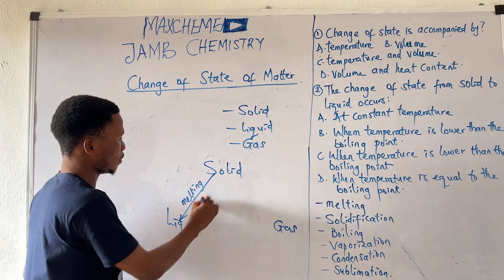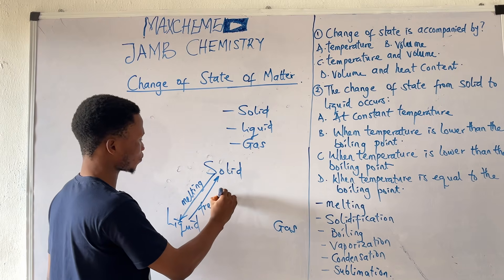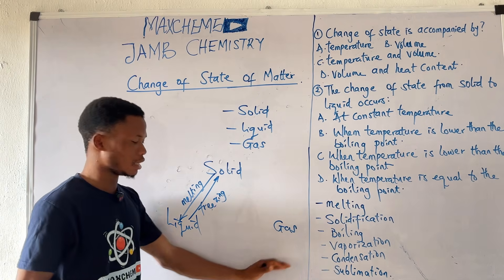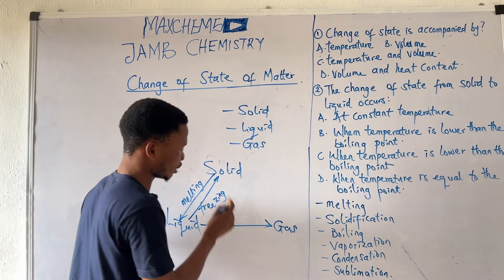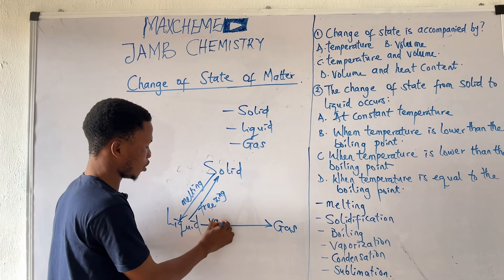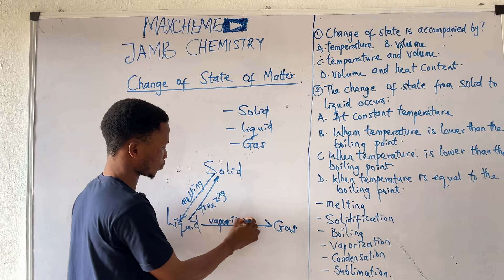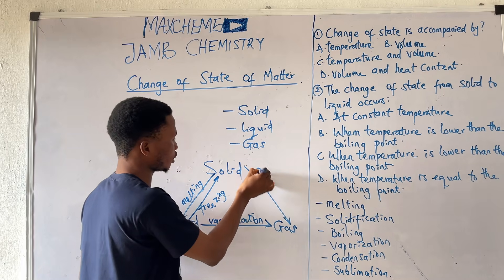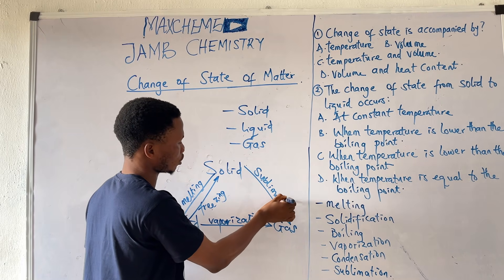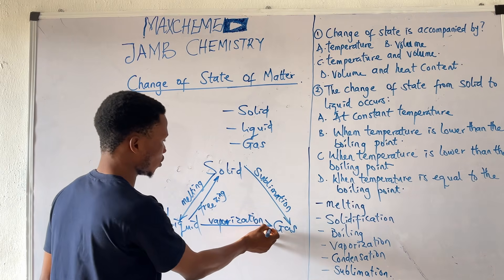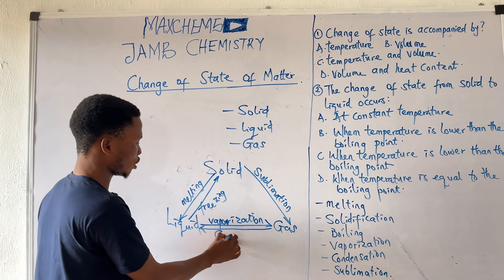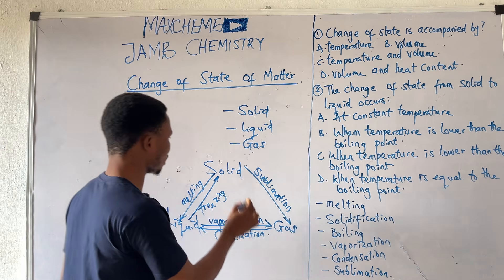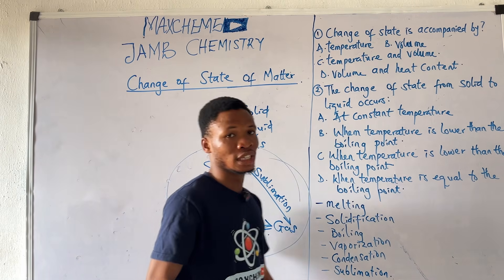From liquid back to solid is known as freezing, or we call it solidification. From liquid to gas is known as vaporization. From solid to gas is known as sublimation. From gas to liquid is condensation. So these are the main changes of state of matter.